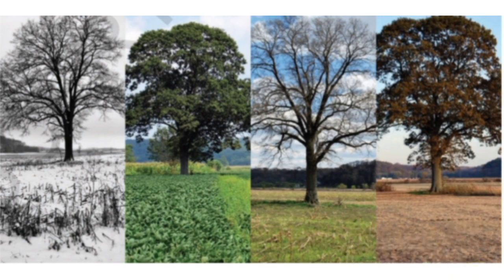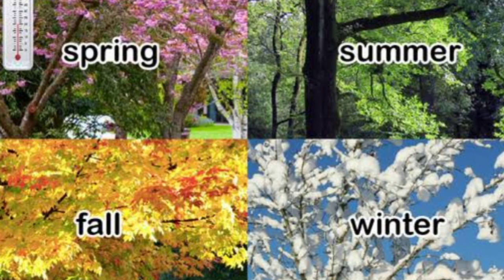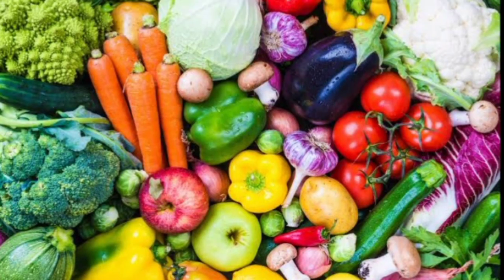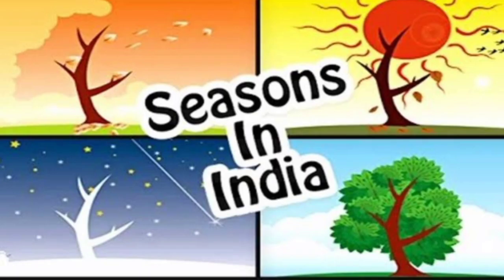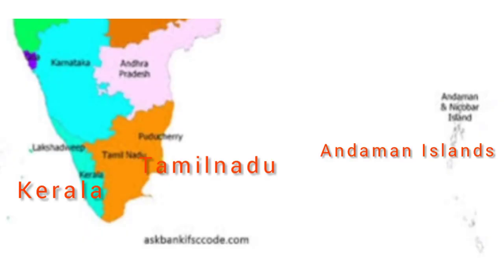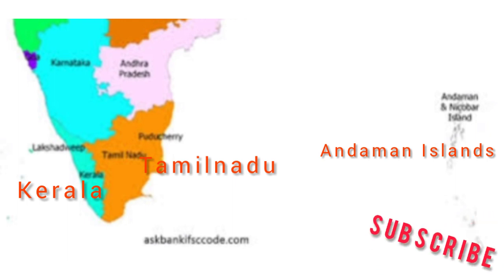There is another example: in the different seasons, we get different kinds of vegetables and fruits. Broadly, the Indian subcontinent has three seasons: Summer, Monsoon, and Winter.